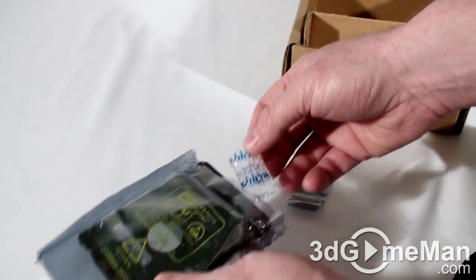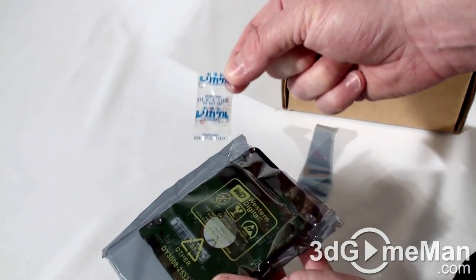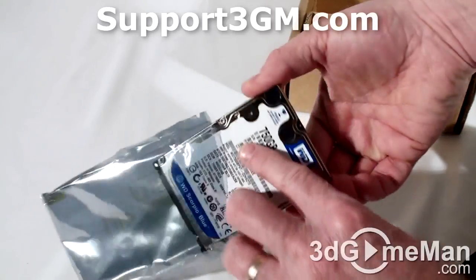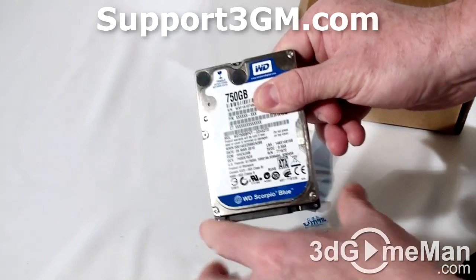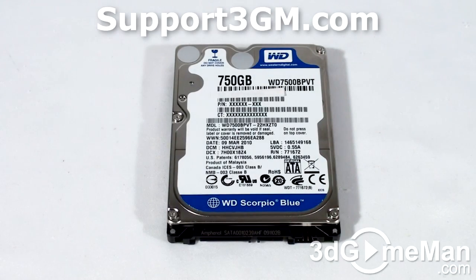Oh, and this is a silica gel pack. This is to absorb moisture. And here is the hard drive. I'll have much more on this hard drive in an upcoming video review.